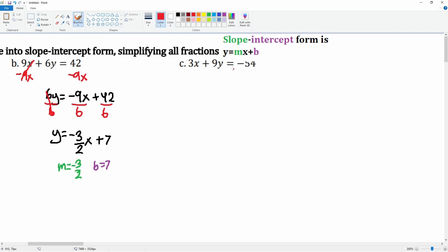The third one, 3x plus 9y equals to negative 54. Subtract 3x to both sides. The 3x minus 3x cancels, leaving you with 9y equals to negative 3x minus 54. Then you're going to divide by the 9 to both sides.